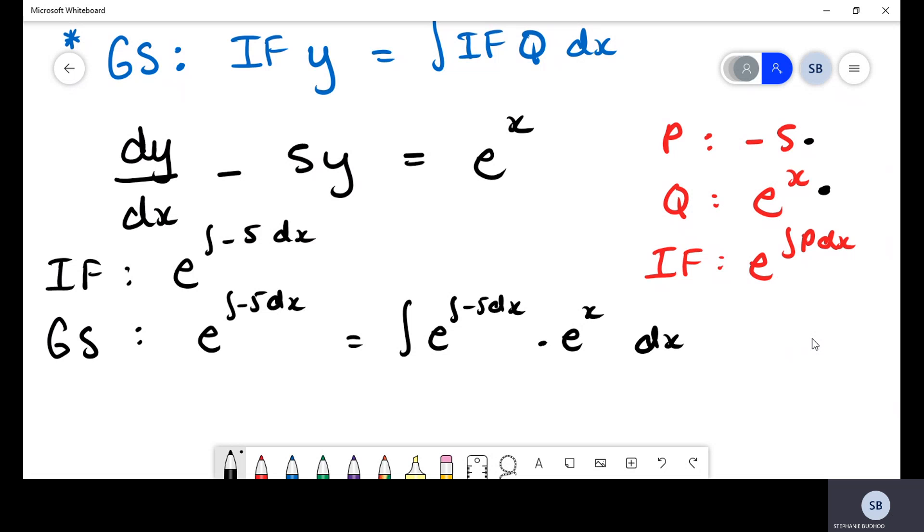You can also choose to calculate your integrating factor before substituting into your general solution, such that you'll get the integral of -5 is -5x. If you choose to do that, you can write down your integrating factor directly after integration.